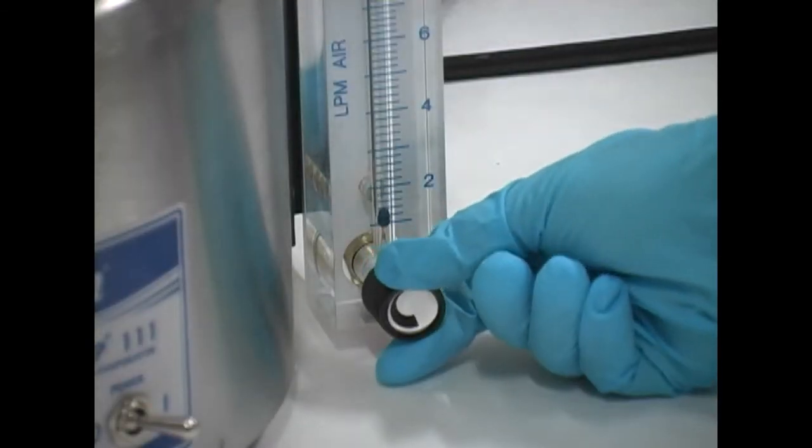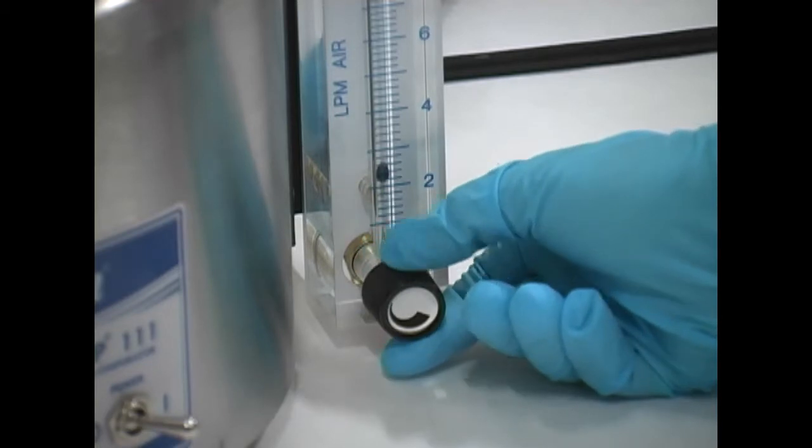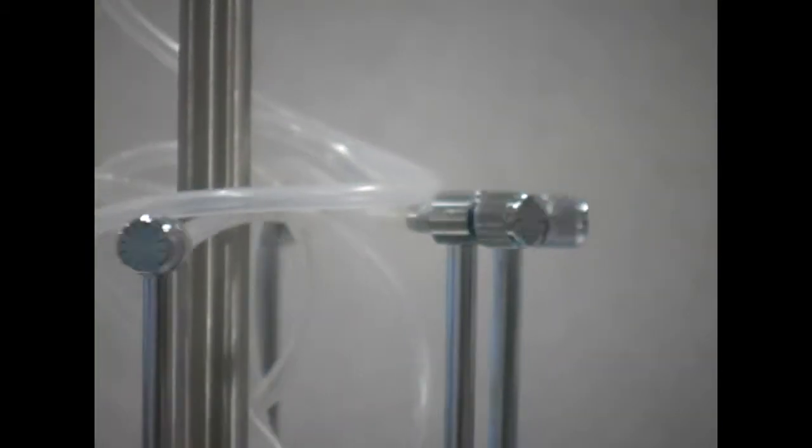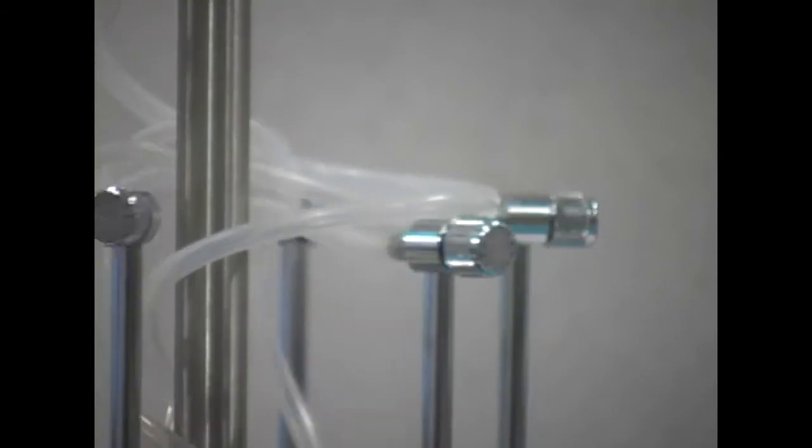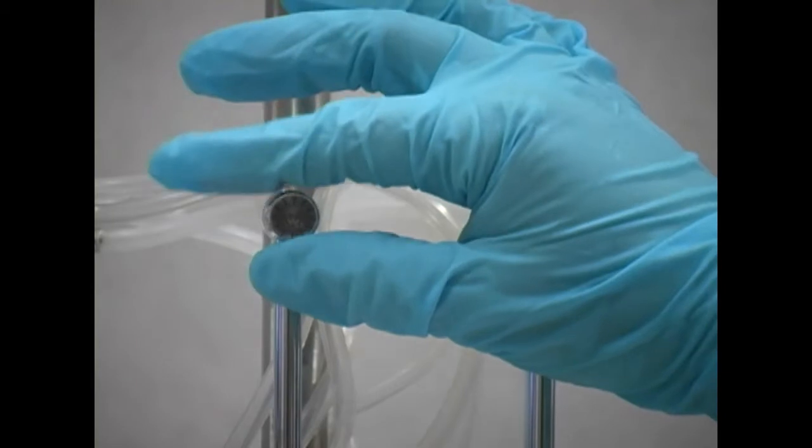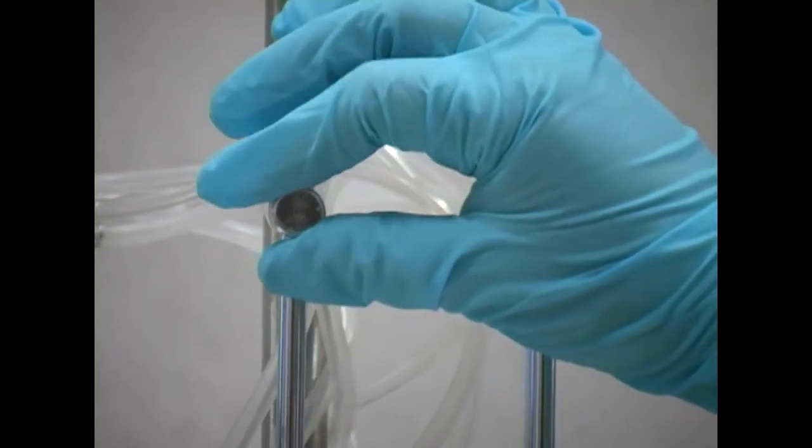Once samples have been loaded, the flow meter allows the user to easily adjust the flow of nitrogen entering the system. The user is in full control of the nitrogen flow delivered to each sample with our chrome-plated needle valves. Each valve rotates to allow the perfect amount of nitrogen flow to diverse samples.